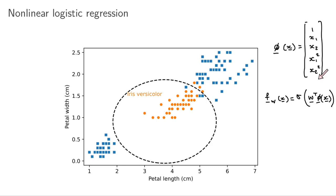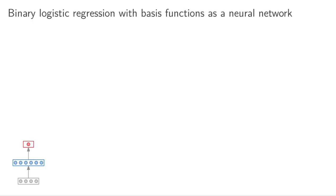I'll convince you that this model with basis functions is kind of like a neural network. The key difference is that instead of constructing the basis functions by hand — as I did with x1-squared and x2-squared — a neural network comes up with the basis functions on its own. We define a loose structure for the basis functions, but we learn their parameters.